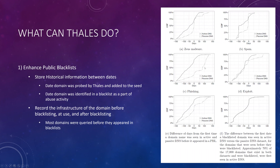They also examined Zeus malware, phishing, and exploits. Looking at the difference in days between the first time a domain was seen and when it appeared in a public blacklist, active DNS identified domains earlier. Approximately 70% of the 17,000 blacklisted domains were first seen in active DNS data rather than passive DNS data.